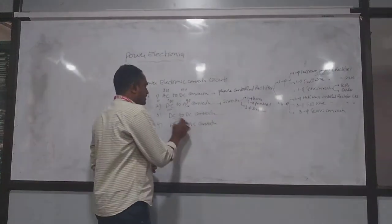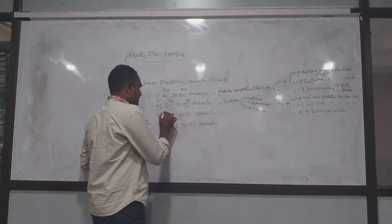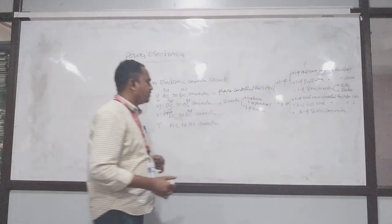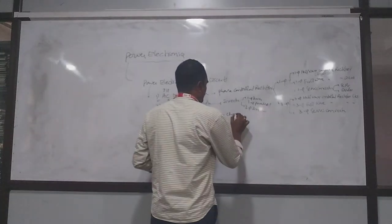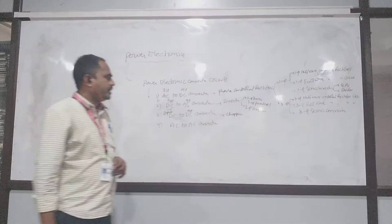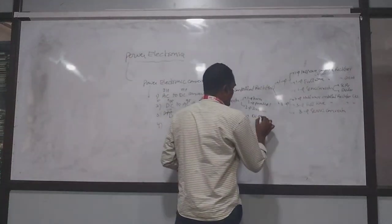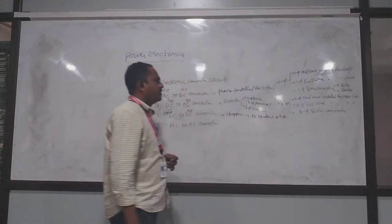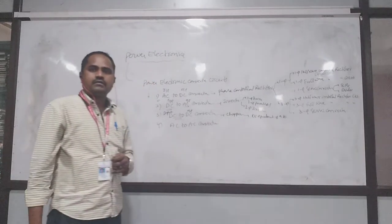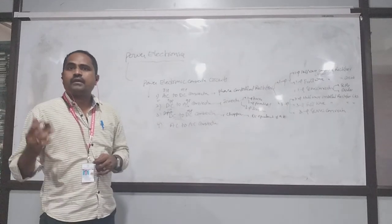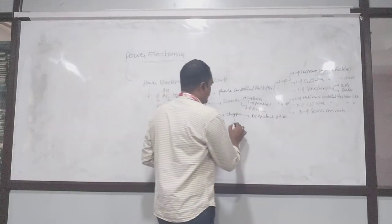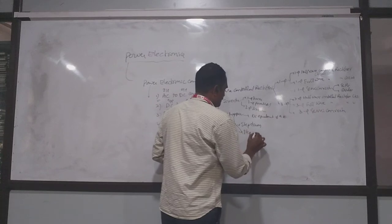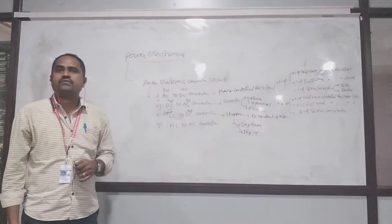Next, DC to DC converter: here the input is a fixed DC and the output is a variable DC — from fixed to variable DC. This is called a chopper. It is the DC equivalent of a transformer. Similar to transformer classification of step-up and step-down, the chopper classification is also step-down and step-up.